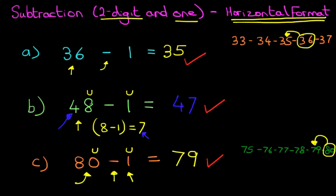So, that is subtraction of a two-digit number and 1 using the horizontal format.